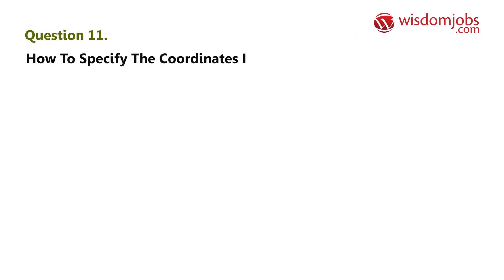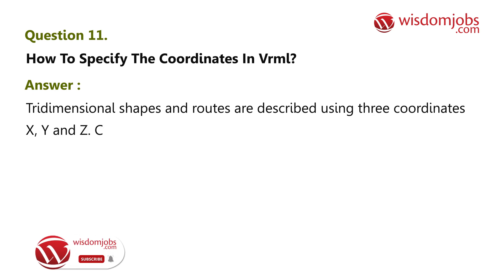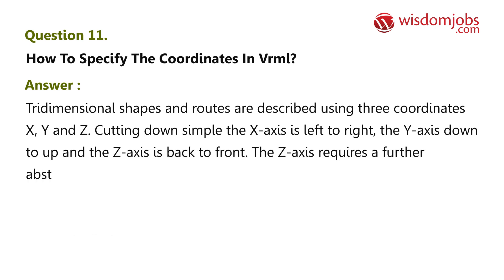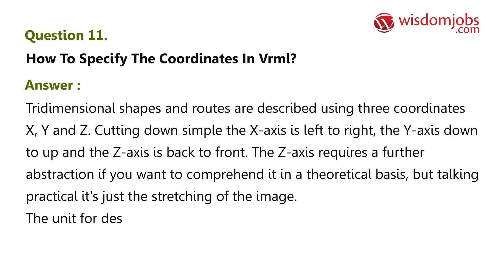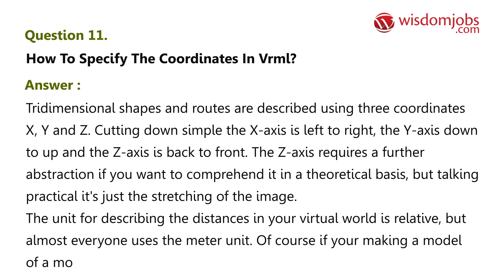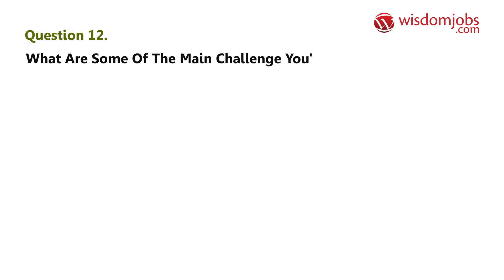Question 11: How do you specify coordinates in VRML? Answer: Three-dimensional shapes and routes are described using three coordinates: x, y, and z. The x axis is left to right, the y axis is down to up, and the z axis is back to front. The z axis requires further abstraction theoretically, but practically it's just the stretching of the image. The unit for describing distances is relative, but almost everyone uses meters — unless you're modeling a molecule, in which case you'd use angstroms.